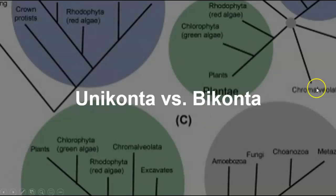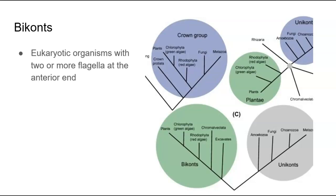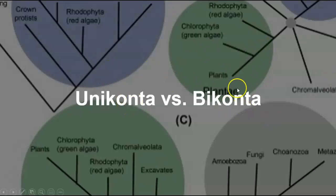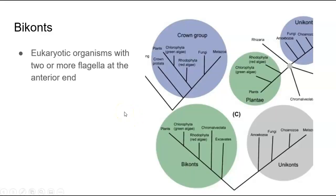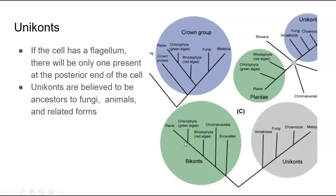In your lab manual there is a discussion over uniconta versus biconta, so I'm going to talk about that briefly. Uniconta and biconta are believed to be ancestral eukaryotic cells. Biconts were eukaryotic organisms that had two or more flagella at the anterior end of the cell — it is believed that many organisms such as plants probably came from biconts. Uniconta were cells that had one flagellum if they had any, and the flagellum was located at the posterior end of the cell. Uniconta are believed to be ancestors to species including fungi, animals, and some related forms.